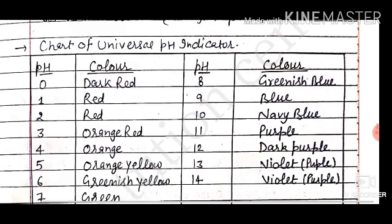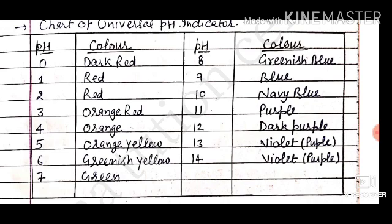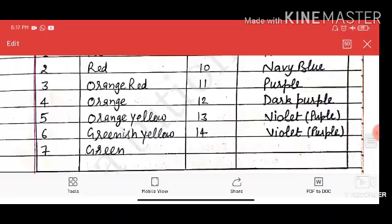You have to remember this chart. At pH 0 to 2 the color is red, pH 3 to 4 is orange, pH 5 to 6 is yellow-green, pH 7 is green (neutral), pH 8 is greenish blue, pH 9 is blue, pH 10 is navy blue, pH 11 to 12 is purple, pH 13 to 14 is dark purple. Green color means the solution is neutral.